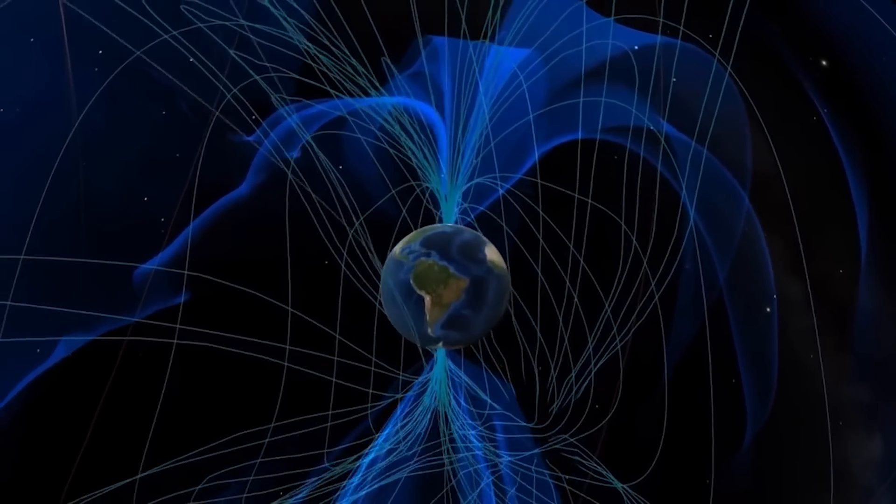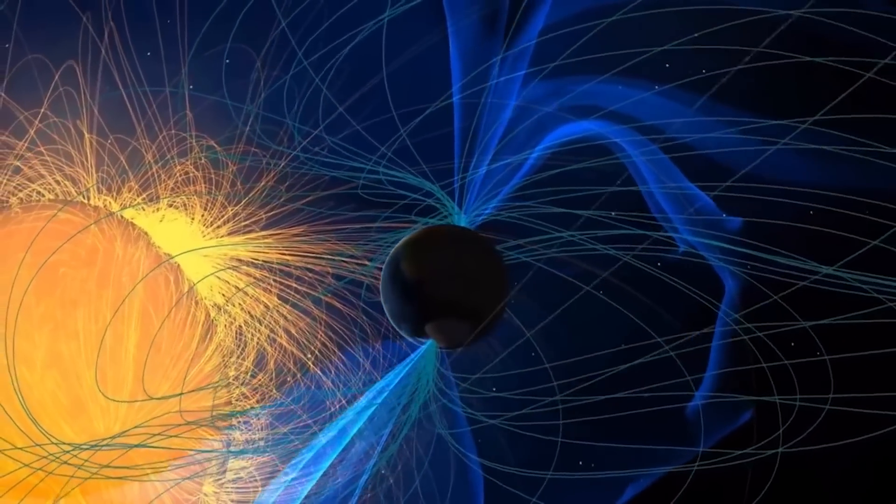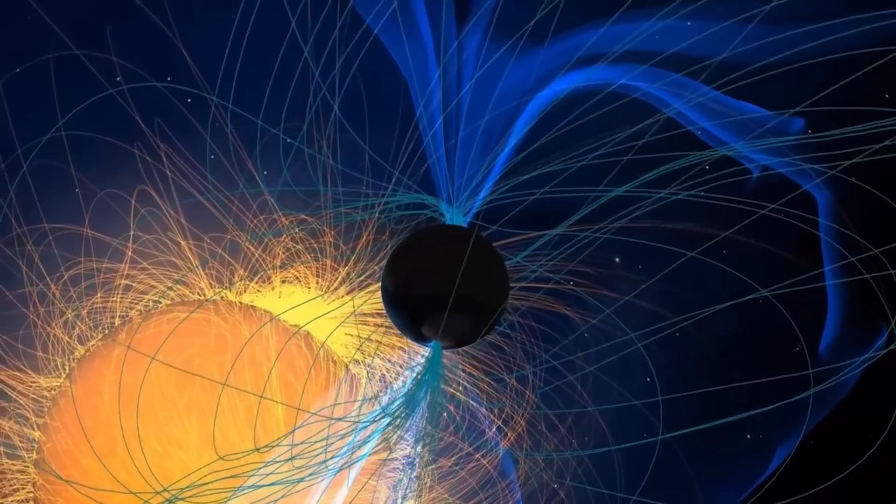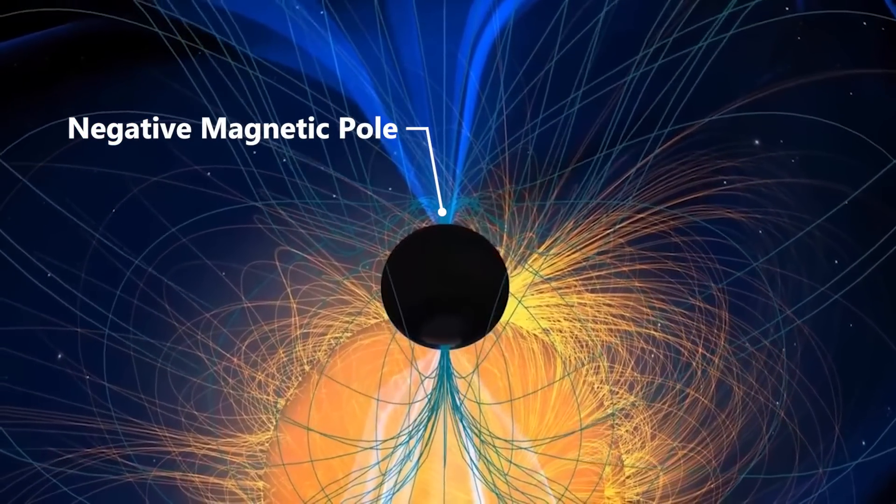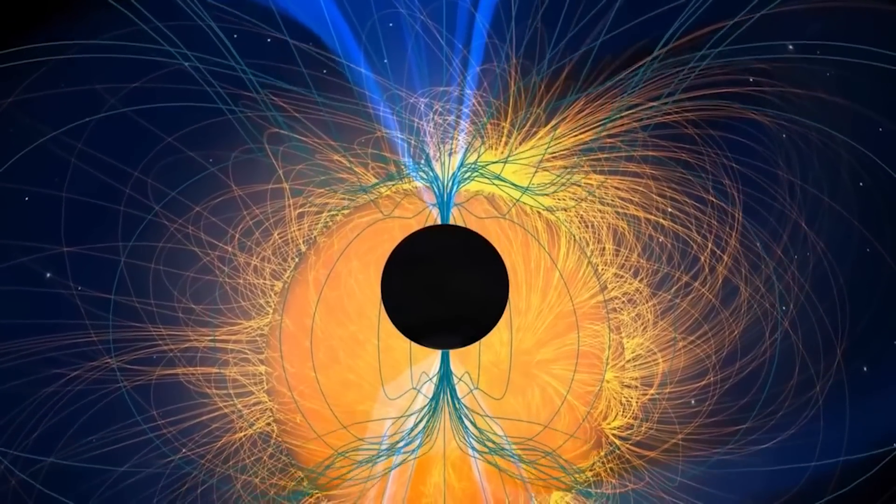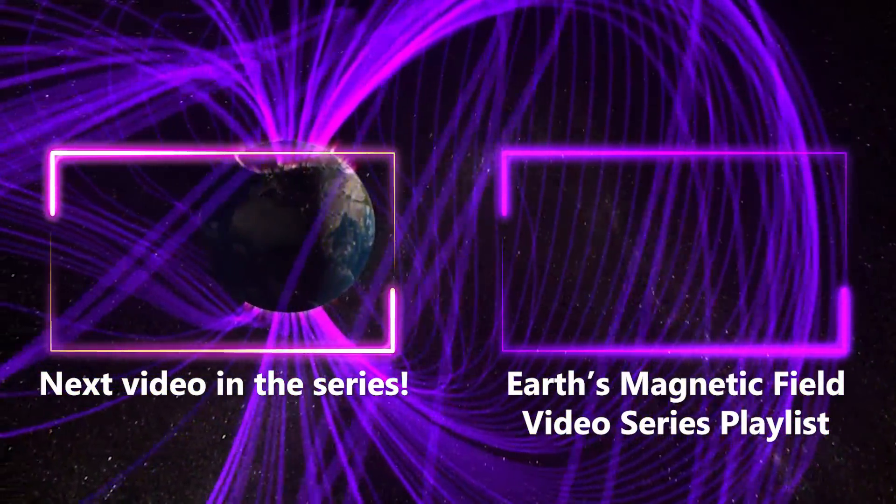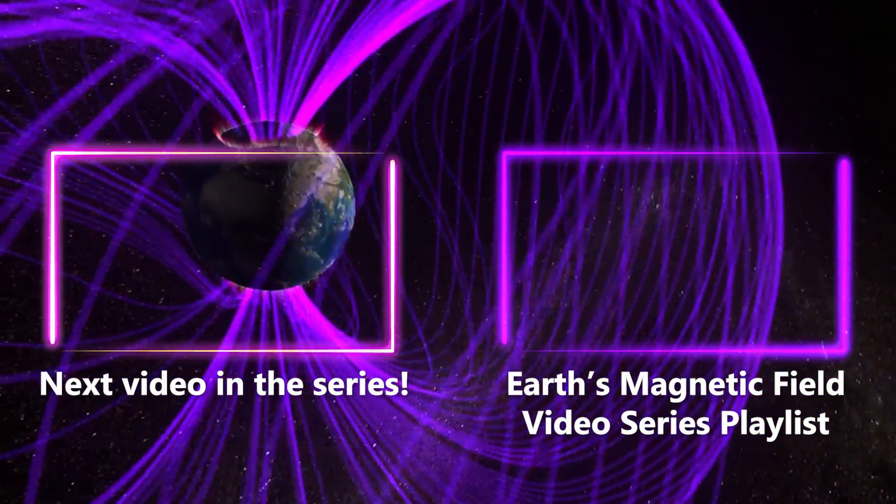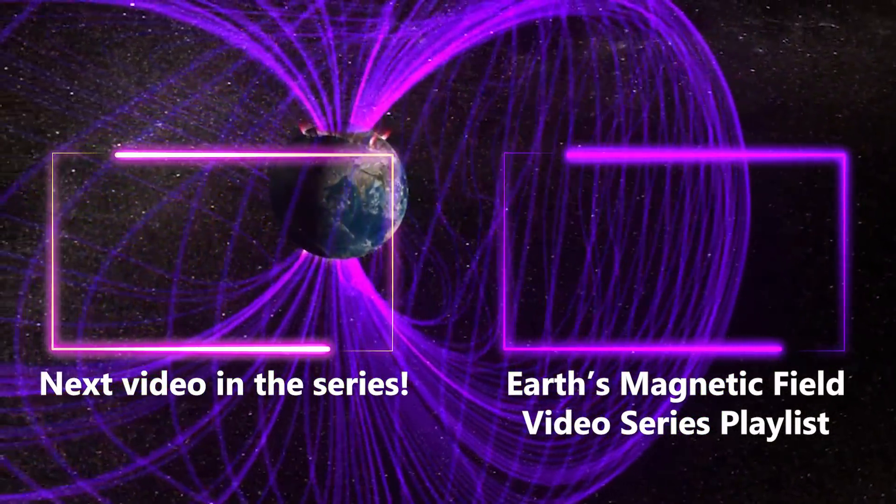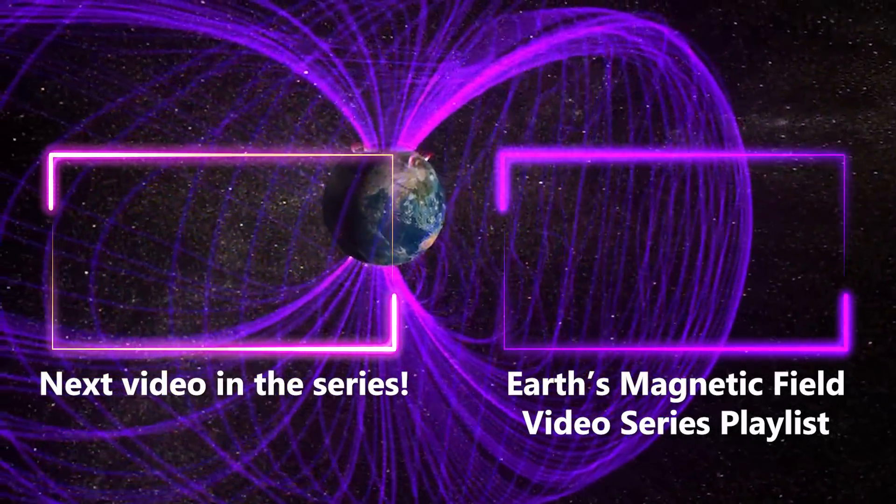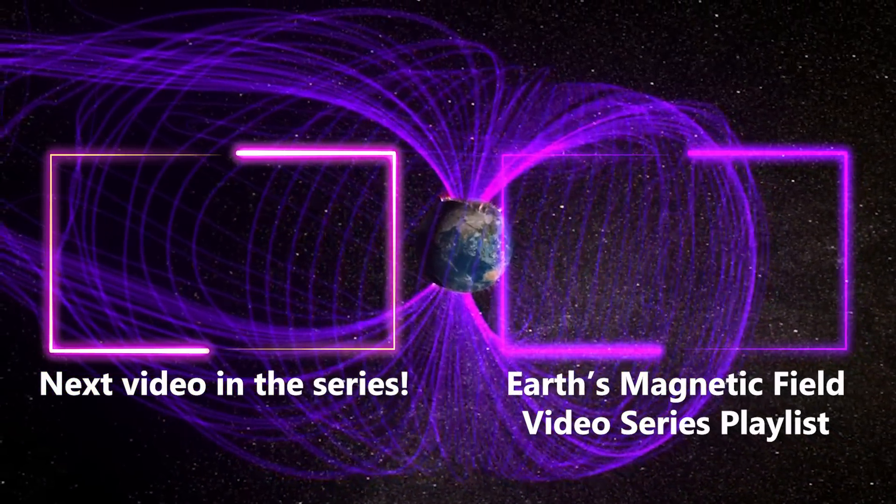There is a lot more to cover, but that does it for this basic introduction to Earth's magnetic field. And in the next couple videos, we will discuss the movement of Earth's magnetic poles, first the negative pole in the northern hemisphere, which has been moving rapidly, and then the positive pole in the southern hemisphere. Continue to the next video by clicking on the box to the left, or check out the entire video playlist by clicking on the box to the right. There are resources in the video description. Again, I've been your host, Stefan Burns, please subscribe, and see you all in the next one.